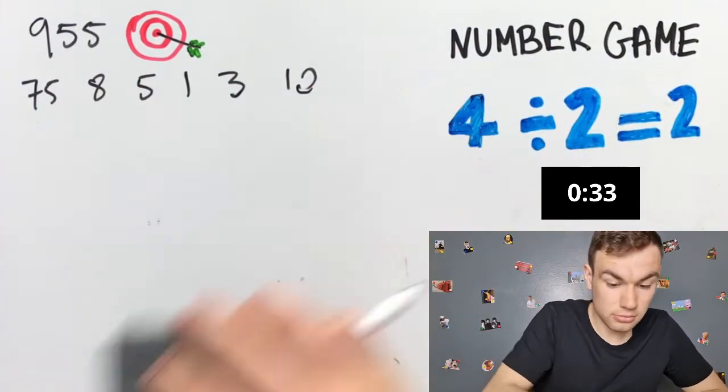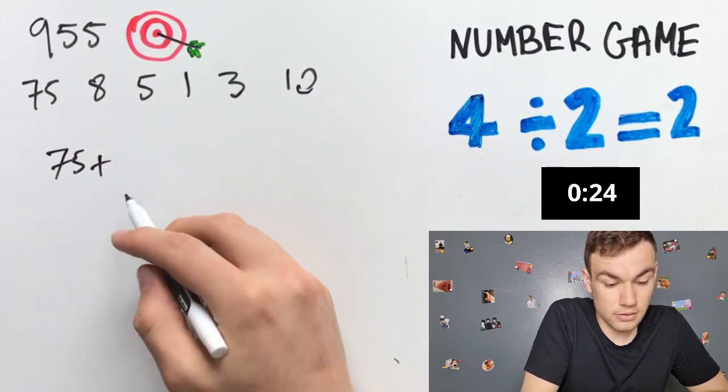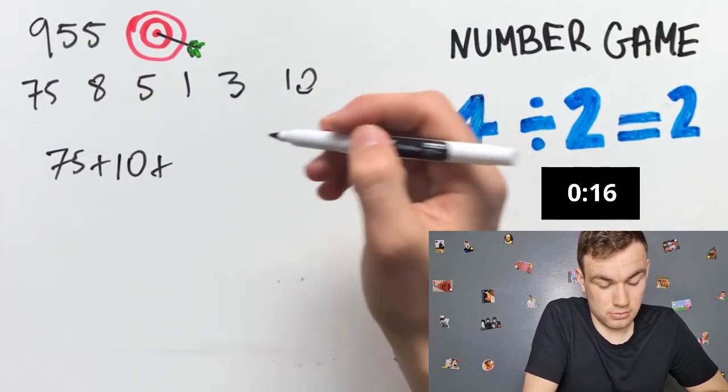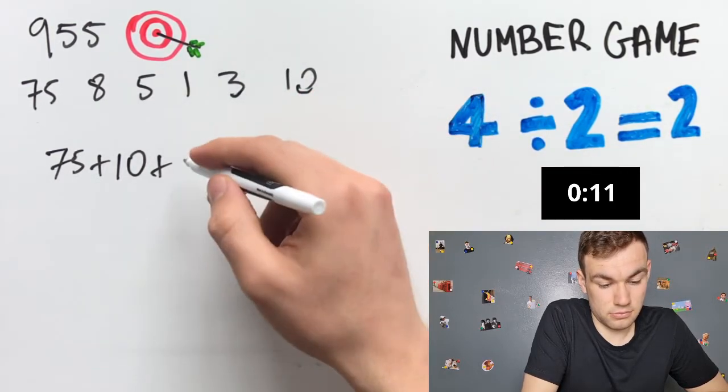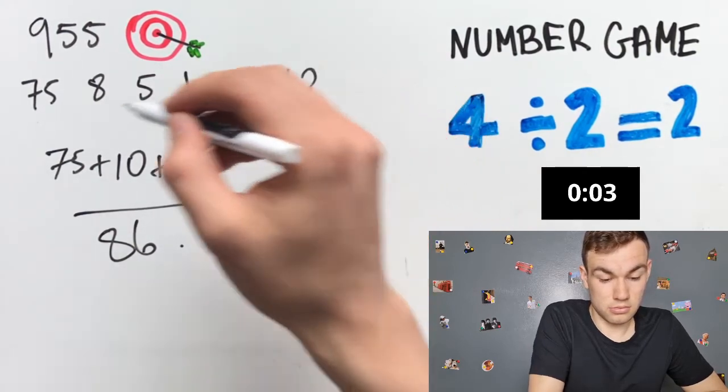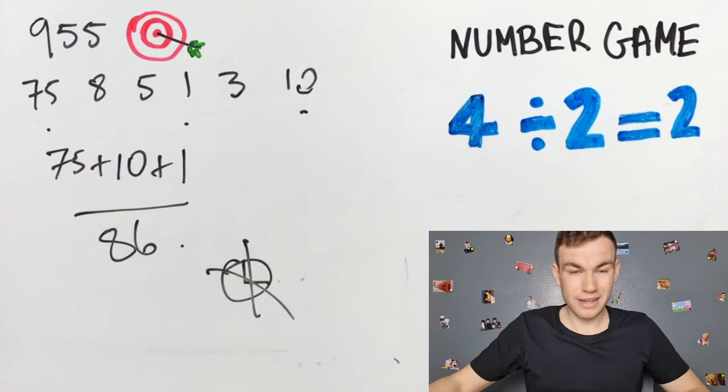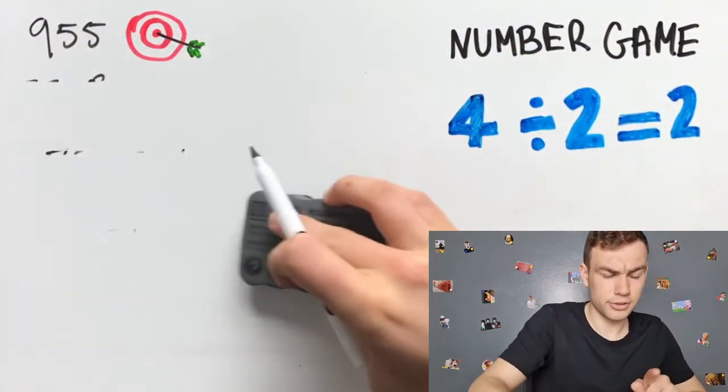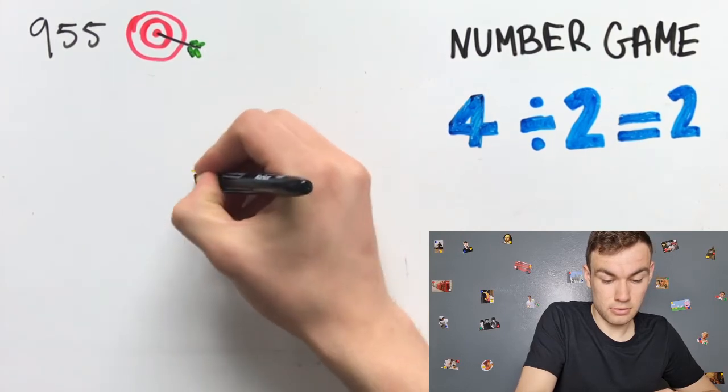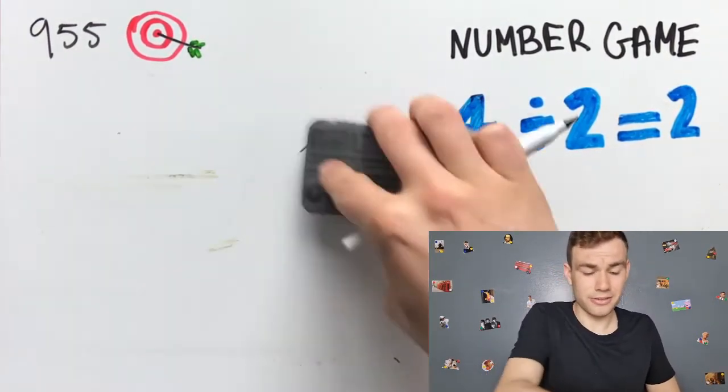One last go. 75 plus 10 plus 1 is equal to... and we are out of time so our time has ran out. I did not manage to get the answer. Did you? I did not win.